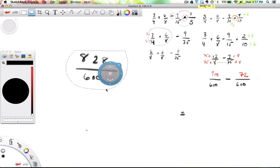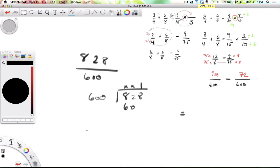So 828 over 600 is a division. Let's turn this into a mixed fraction. Let's do 828 divided by long division, 600. So 600 will fit inside the 828 at least once. 1 times 600 is 600. Subtract. So this gives 1 and 228 over 600.